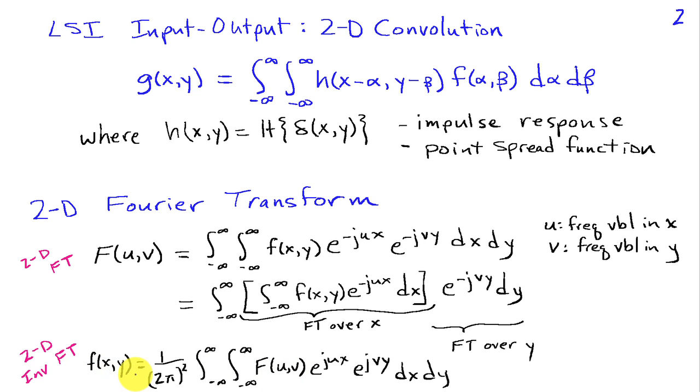So I can think about decomposing my signal, F of X comma Y, as a weighted combination of two-dimensional sinusoids.